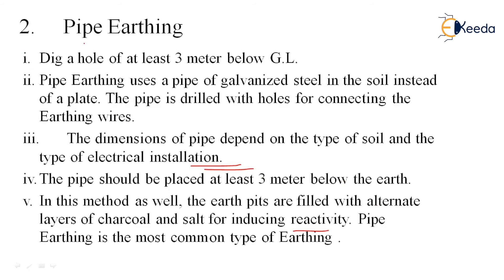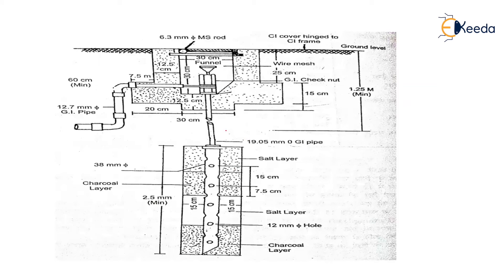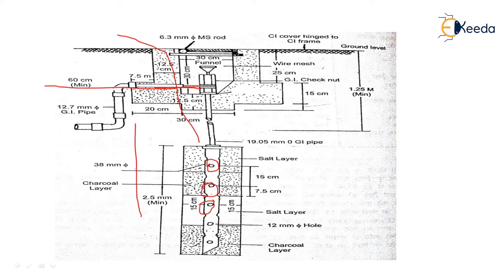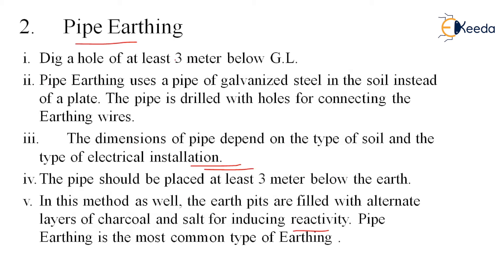Instead of a plate, the most common type is pipe earthing. The procedure: dig the pit downward, fix the pipe vertically, ensure holes are present in the pipe for current discharge. Connect the wire to the pipe and bring it out to the surface. A funnel can be inserted here as well for watering. Fill the pipe and surrounding pit with charcoal and salt. Flush with the ground level and cover it. Maintain moisture throughout the year. This is the working of the pipe earthing system.